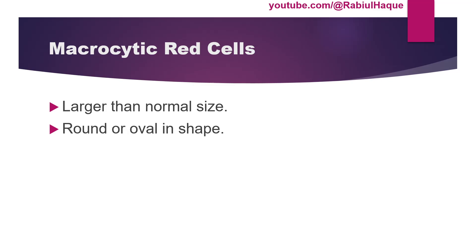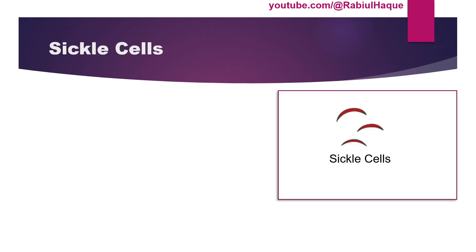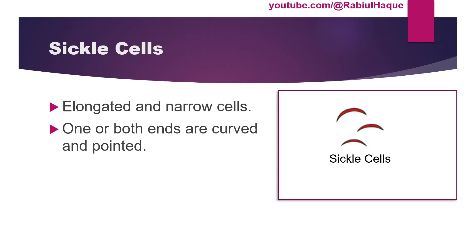Sometimes we can have red cells in the shape of a sickle, which is particularly seen in sickle cell anemia. Sickle cells are elongated, narrow cells where one or both ends are curved and pointed. In many textbooks you may also hear the term inverted boat shape for this type of cell.